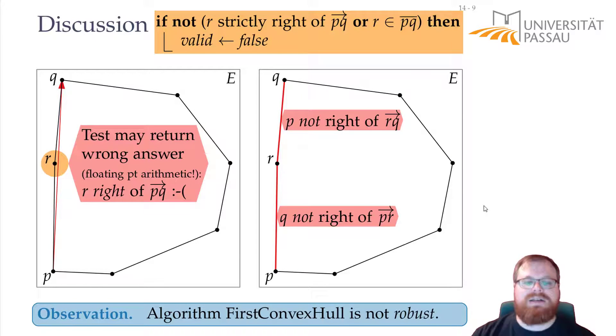That means that the algorithm FirstConvexHull is not robust. Robust means that you always get a feasible solution. But what we get here might not be anything that resembles a convex hull at all. So both the running time is not very good with Θ(n³), and it's even not robust, so we might get a wrong solution. So that's not the best algorithm that we can get at all. And in the next part we want to find a better algorithm.